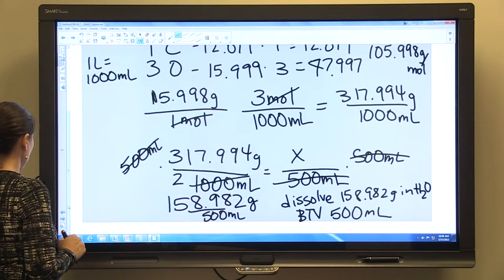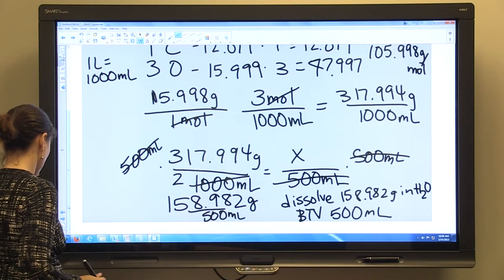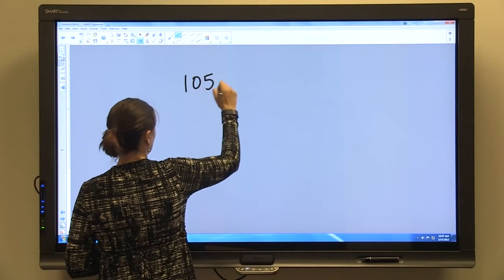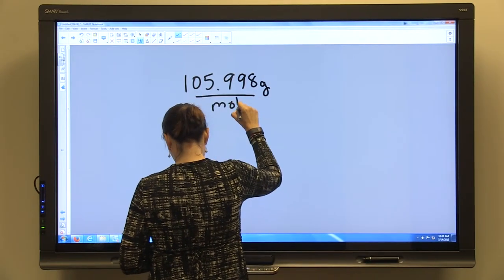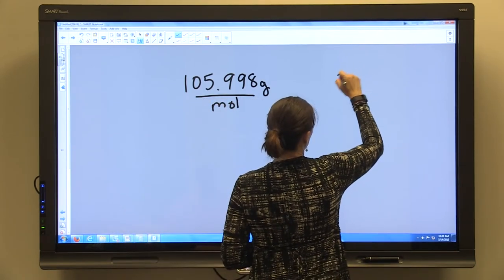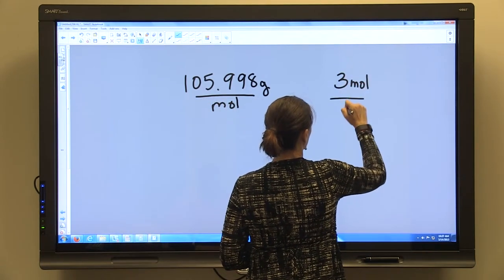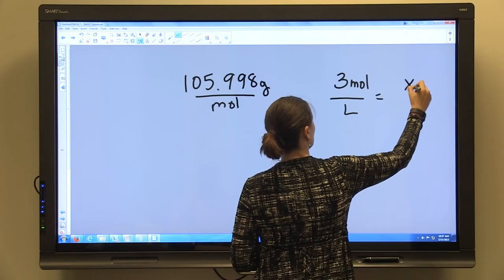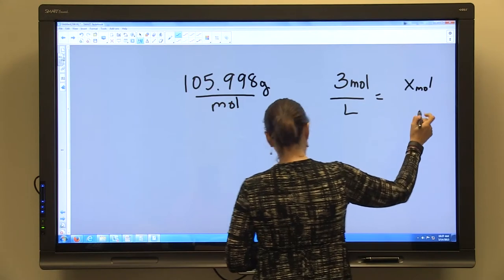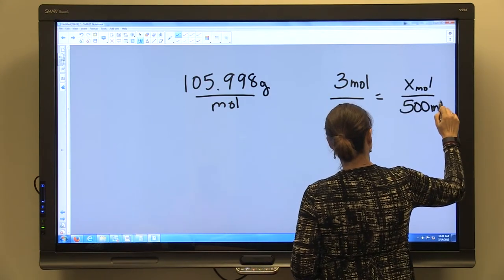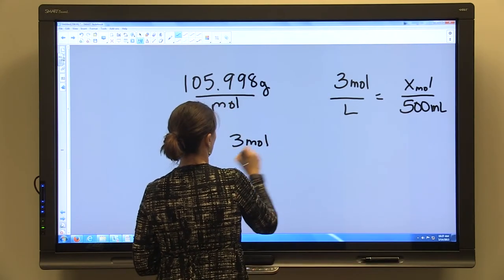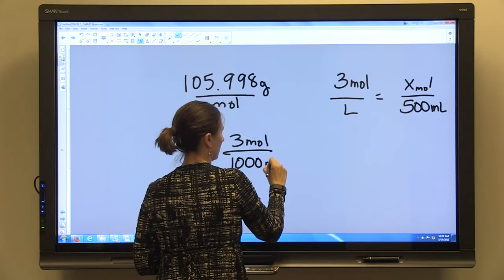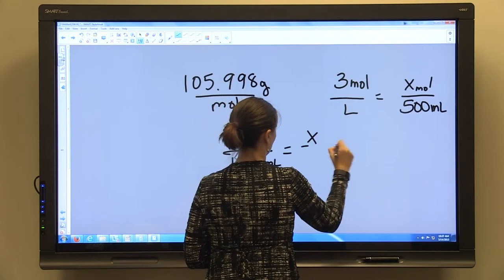There is another way we can do this problem. We can know that we have 105.998 grams per mole, and we can know that 3 moles per liter equals how many moles per 500 ml. So we can say that 3 moles per 1,000 ml equals x per 500 ml.